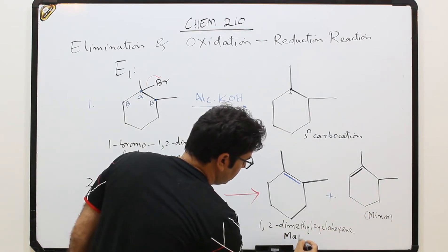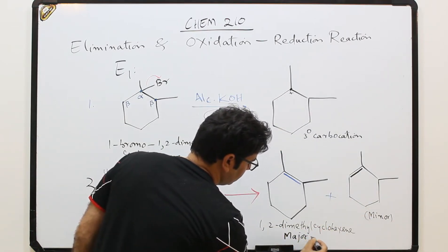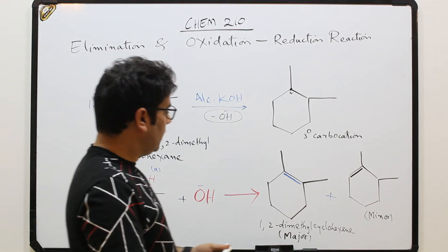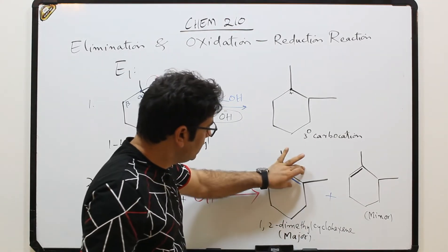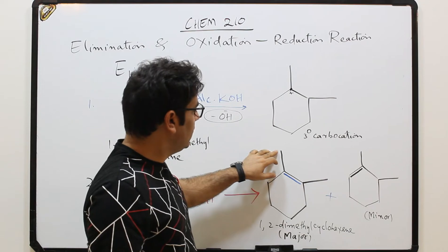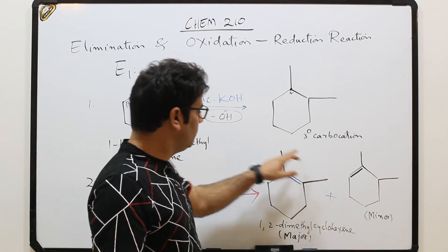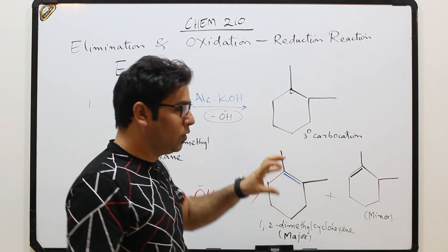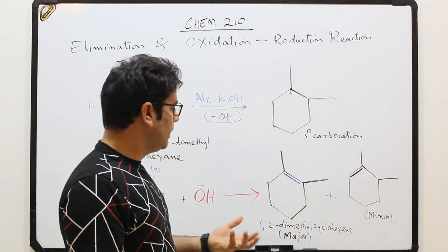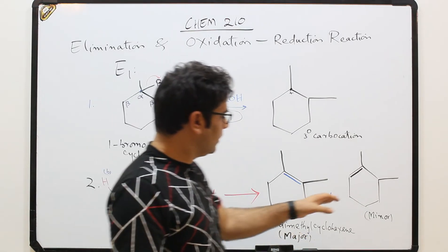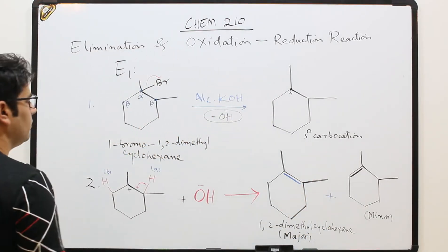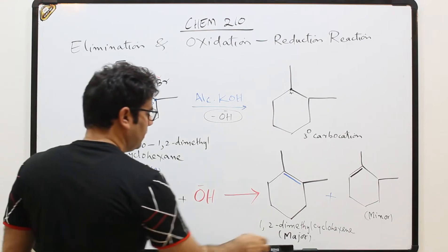This is the major product. The double bond here is highly substituted by beta hydrogens on both sides. More beta hydrogens means a more stable alkene — that is why it is the major product compared to the less substituted minor product, as per Zaitsev's rule.